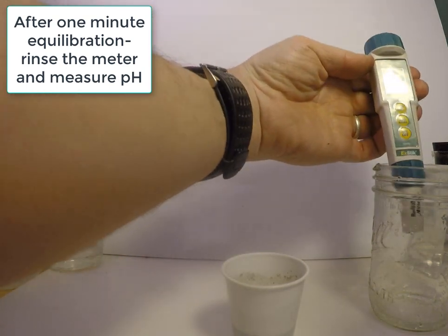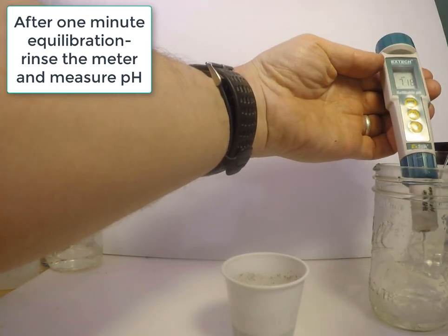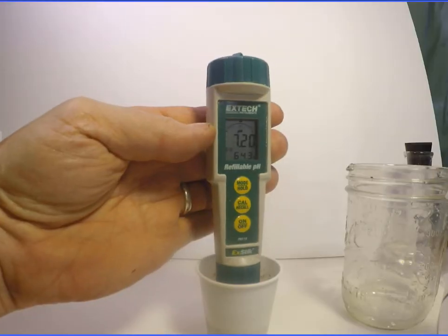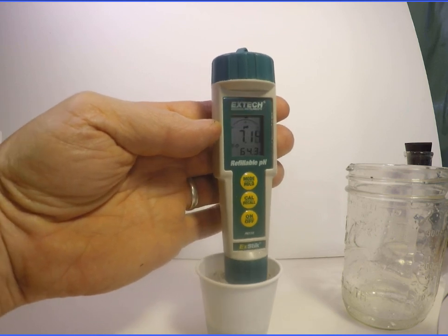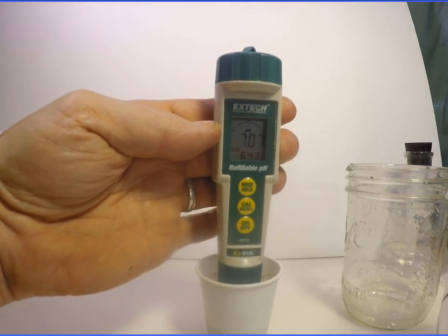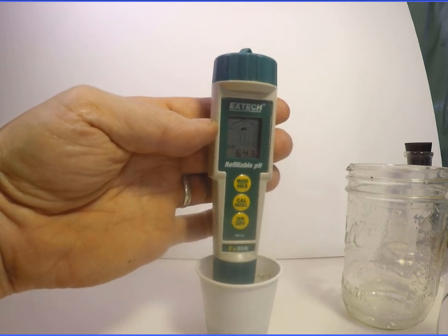After at least 1 minute equilibration, measure the soil pH with the calibrated probe. There will be drifting of the pH at first, but the goal is to measure the pH to the nearest 0.1 unit, or 1 tenth of pH unit, without more than 1 tenth of unit variation in 30 seconds.